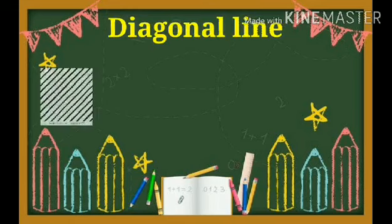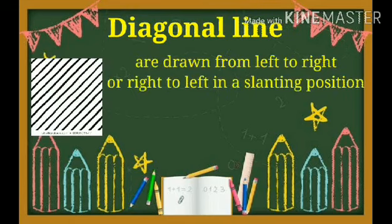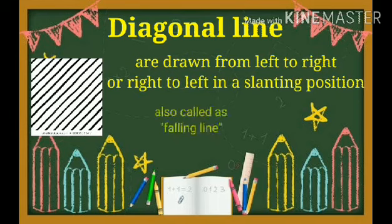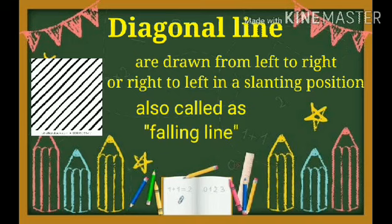And last is diagonal line. Diagonal lines are drawn from left to right or right to left in a slanting position and it is also called a falling line.